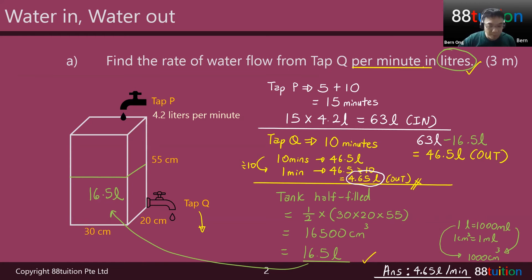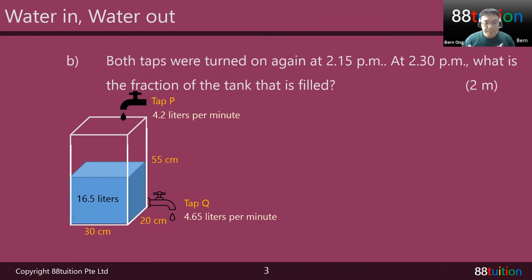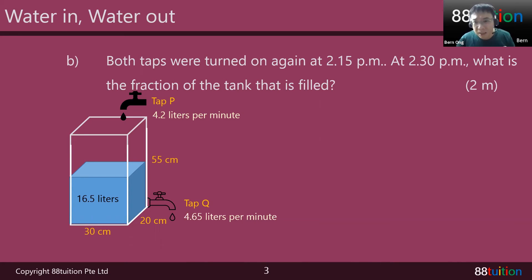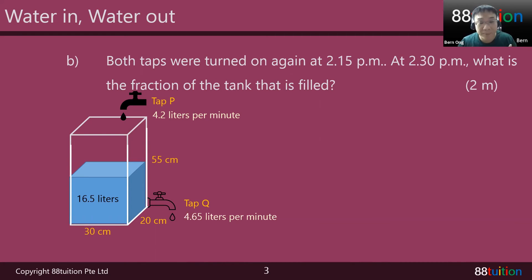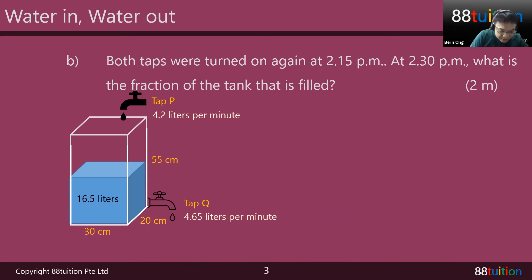Moving on to part B. Both taps were turned on again at 2:15. Before 2:15, tap P was on for 5 minutes, then another 10 minutes with tap Q on draining water. After that, they were both turned off. When they were both turned off, there's still 16.5 liters of water inside — half full, remember?